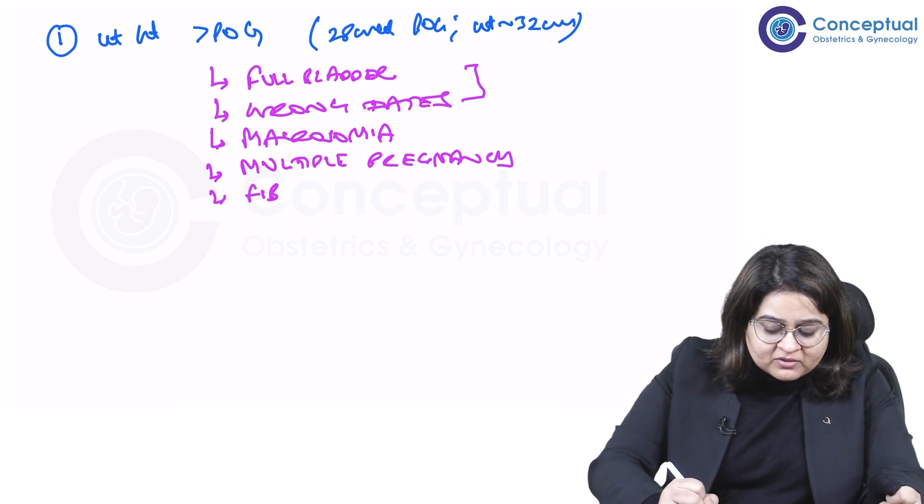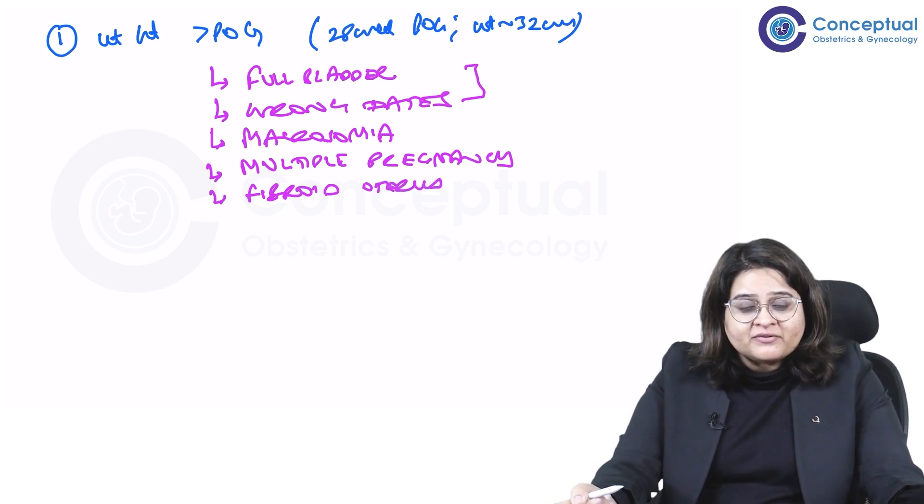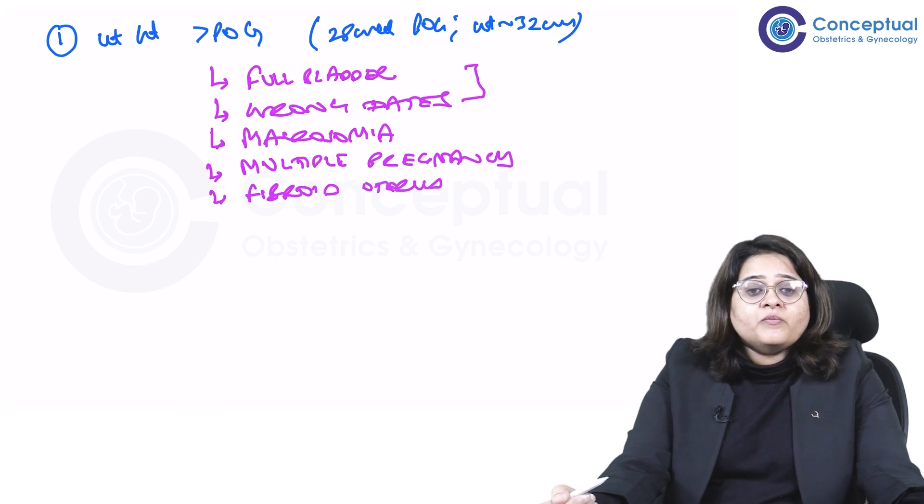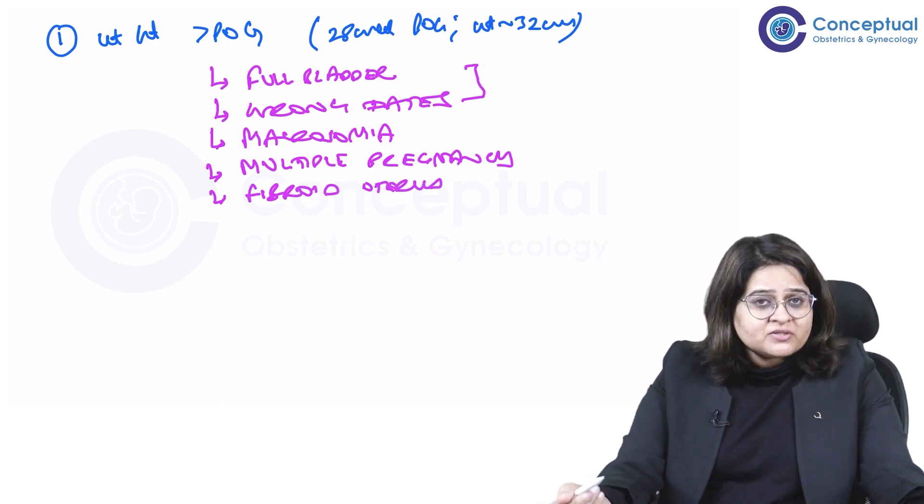So multiple pregnancy. What else could be the cause? There could be fibroid uterus or any space-occupying lesion in the pelvis or the uterus. The most common one is a fibroid uterus. So maybe she has a known case of fibroid. Maybe she doesn't know.